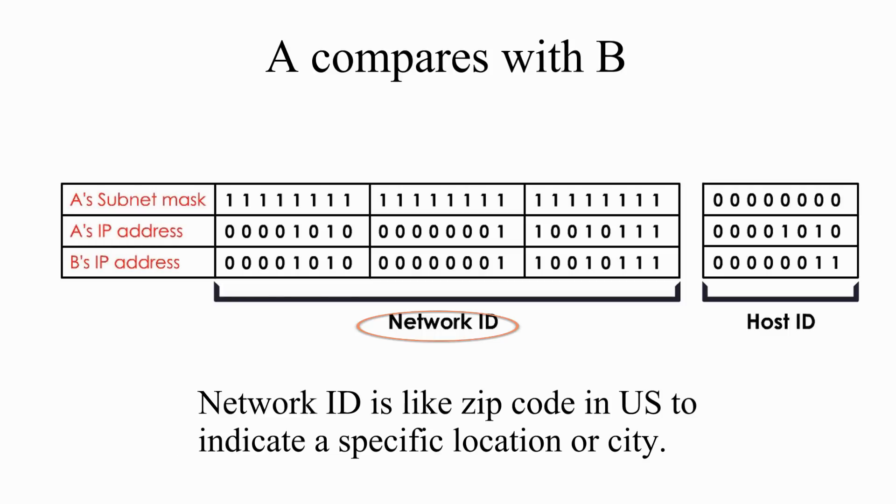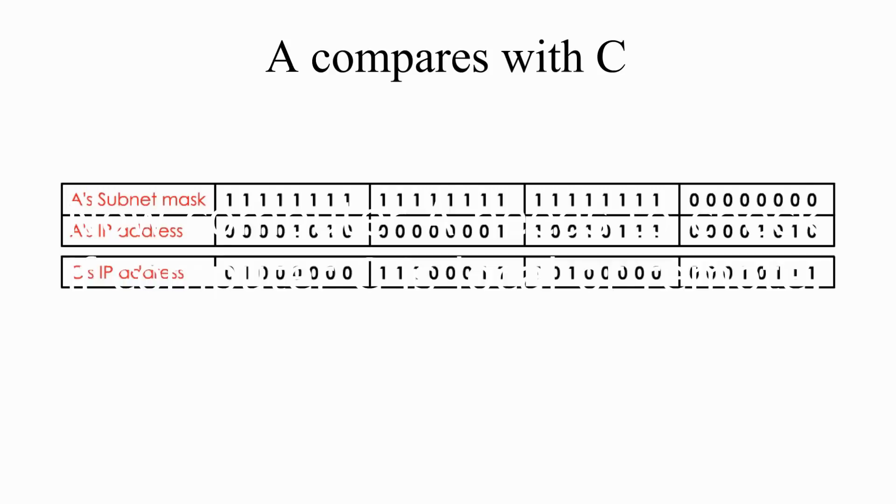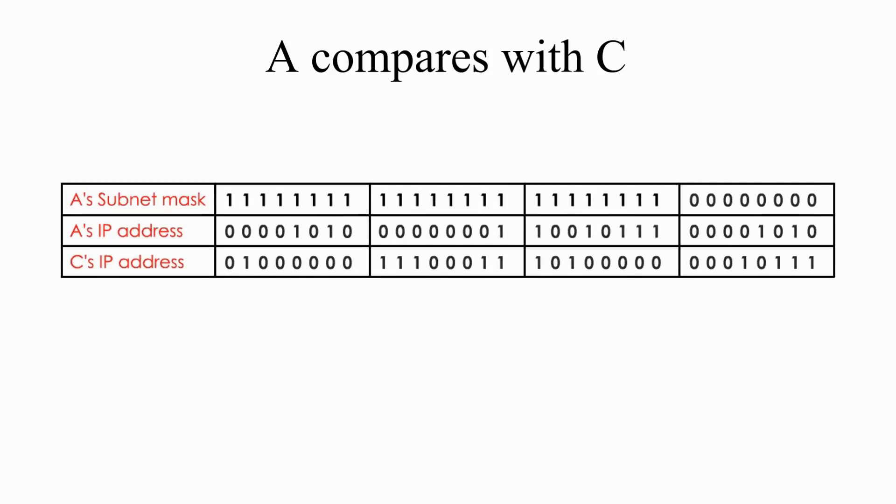Network ID is like zip code used to indicate a specific location or city. Now computer A needs to check if computer C is remote or local by using the same process to compare the IP addresses based on the subnet mask. And we will only focus on 1's part of the subnet mask, ignoring all 0's part.